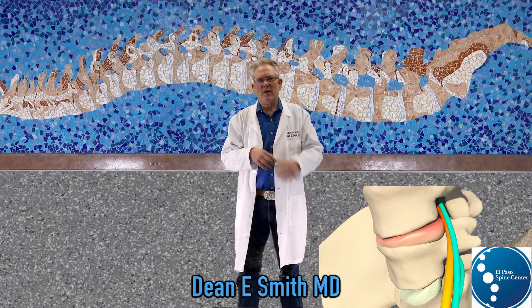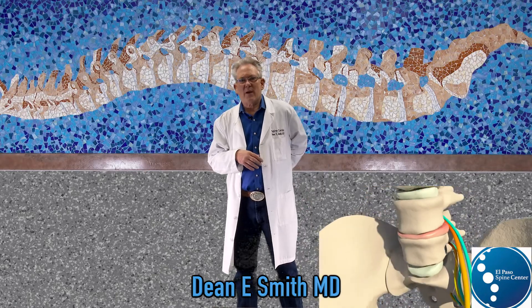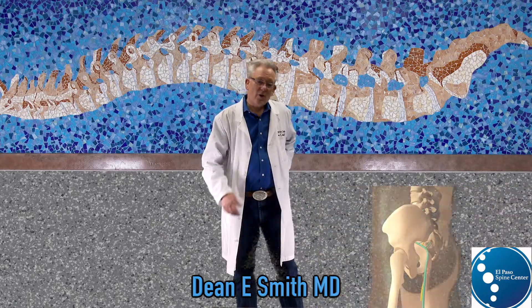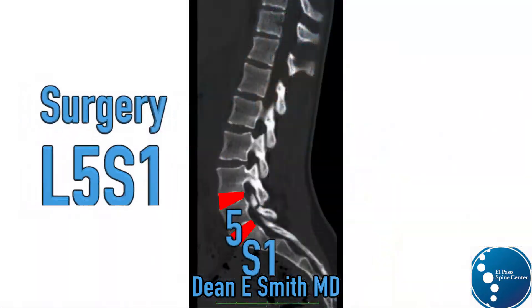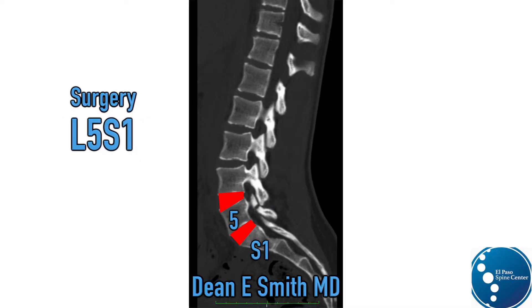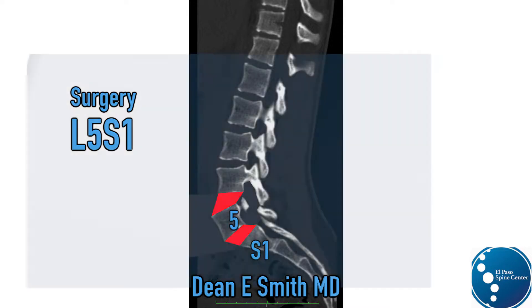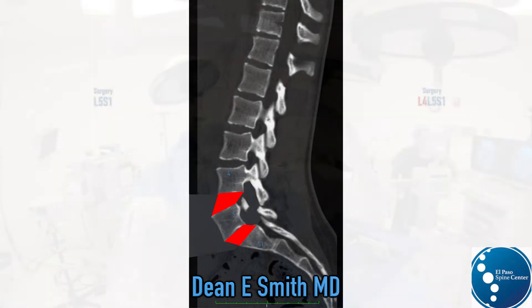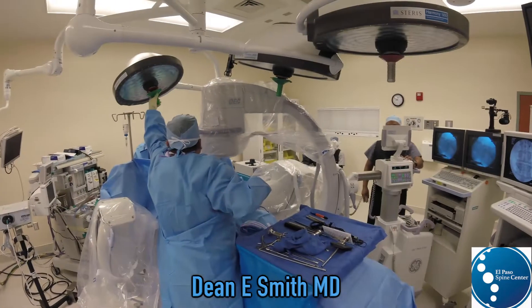With a PARS defect, you can have back pain from the fracture, and you can also have sciatica. If L5 slips enough, you can damage not only the L5-S1 disc, but also the L4-5 disc, and you may need surgery at both levels.